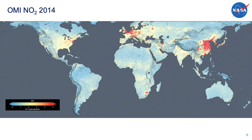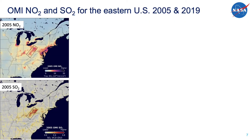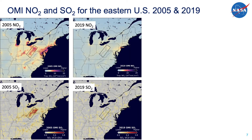It is difficult to see these regional changes on the global maps, so let's zoom into the eastern U.S. Both of these figures of the eastern half of the United States show data from 2005. The top map shows NO2 data and the bottom map is sulfur dioxide, or SO2 data. SO2 is primarily produced from the burning of coal. Jumping forward 15 years to 2019, you can easily see that both NO2 and SO2 have cleaned up dramatically.